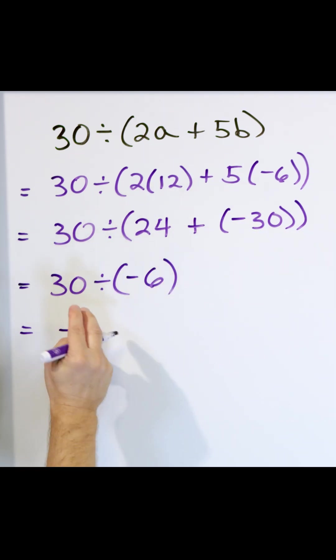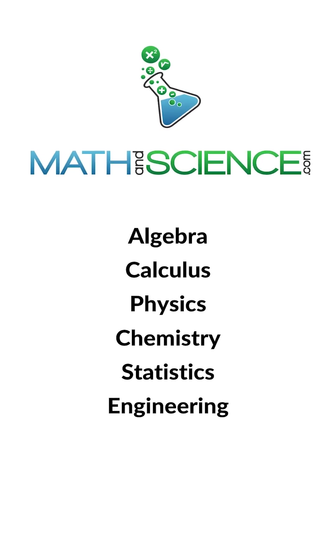Positive divided by negative is negative, and so the answer to this whole thing is negative 5. Learn anything at mathandscience.com.